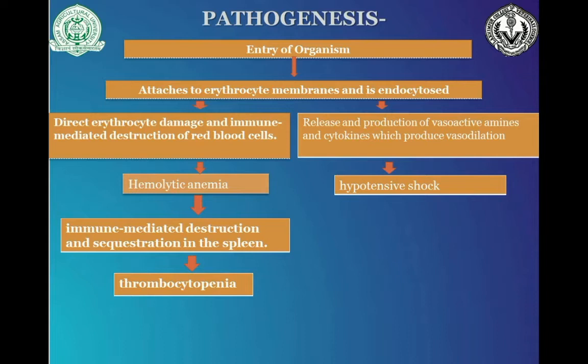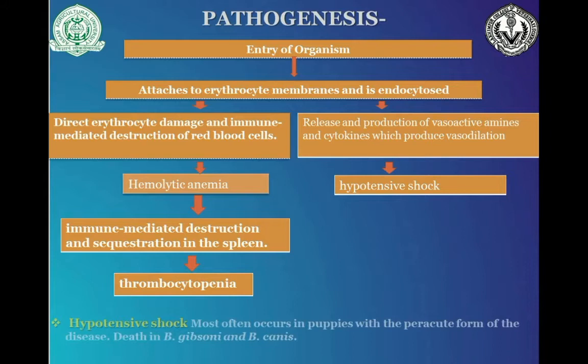The organisms also cause an increase in the permeability of the endothelium, through which plasma flows out of the vessels, causing shock. The hypotensive shock is more common in puppies and in the peracute form of the disease, and may be caused by both Babesia gibsoni and Babesia canis infection.